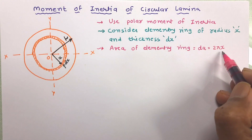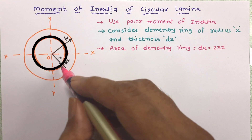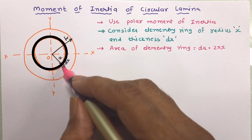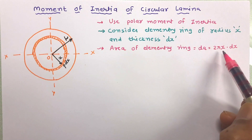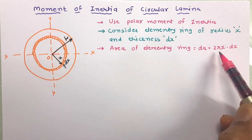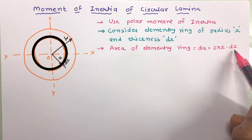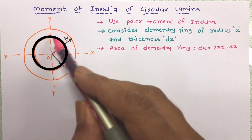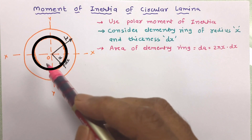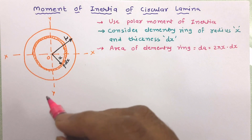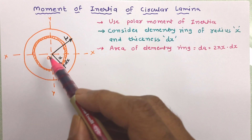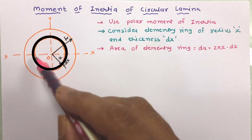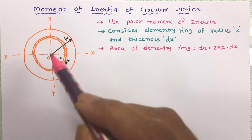The circumference of this elementary ring is 2πx and the thickness is dx, so multiplying the circumference by the thickness gives the area of this elementary ring: dA = 2πx·dx. Now let us work out the moment of inertia of this elementary ring about the ZZ axis.